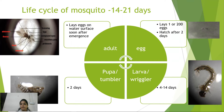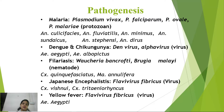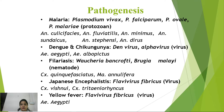Mosquitoes carry many pathogens. Malaria is caused by Plasmodium vivax, P. falciparum, P. ovale, and P. malariae, transmitted by Anopheles culicifacies, fluviatilis, minimus, sundaicus, stephensi, and dirus. Dengue and chikungunya are caused by dengue virus and alphaviruses, transmitted by Aedes aegypti and Aedes albopictus. Filariasis is caused by the nematode Wuchereria bancrofti or Brugia malayi, transmitted by Culex quinquefasciatus or Mansonia uniformis. Japanese encephalitis is caused by flavivirus, transmitted by Culex vishnoi and Culex tritaeniorhynchus. Yellow fever is also caused by flavivirus but transmitted by Aedes aegypti.